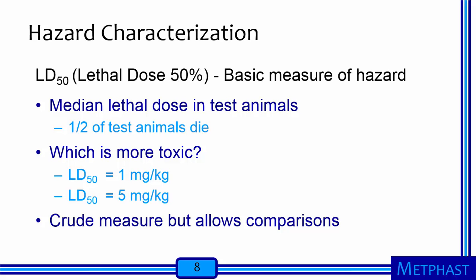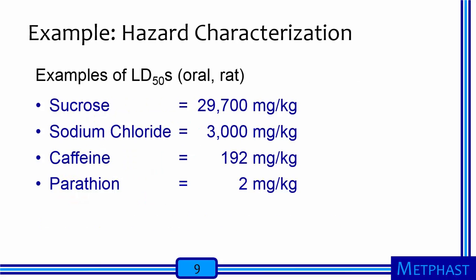An LD50, or lethal dose 50, is the most basic measure of toxicity or hazard. It simply describes the dose needed that will result in the death of 50% of a group of test animals. This number is useful in comparing the toxicity of chemicals. The more of a chemical that it takes to kill 50% of the animals, the less toxic it is. A relatively low number indicates that the chemical is more toxic than another because it takes less of the chemical to have a fatal effect. Thus, an LD50 of 1 mg per kg of body weight is more toxic than an LD50 of 5 mg per kg of body weight. Although an LD50 is a very gross measure of toxicity and doesn't help understand how the chemical is toxic or what effects might occur at low doses over a lifetime, it is useful as a means of comparison.